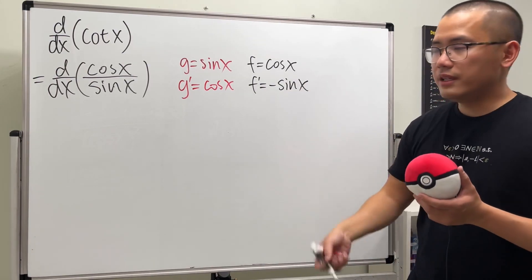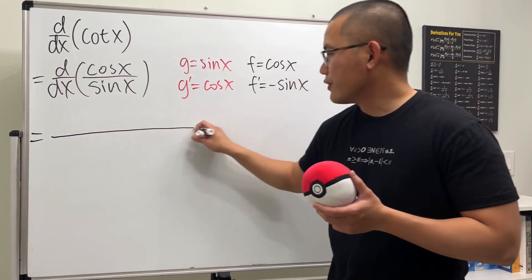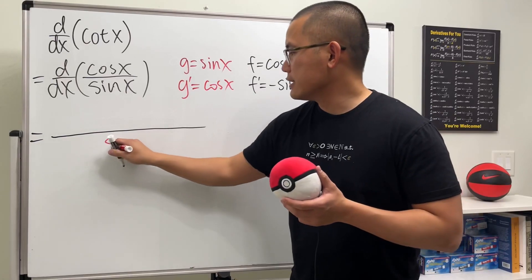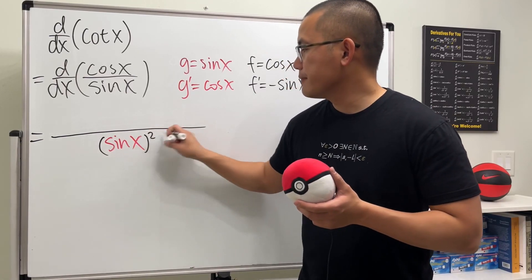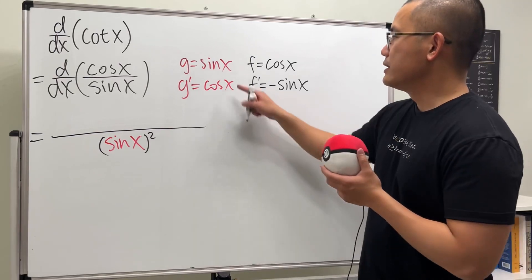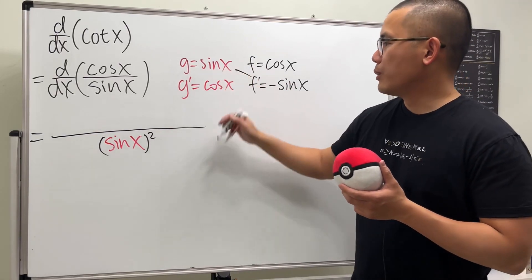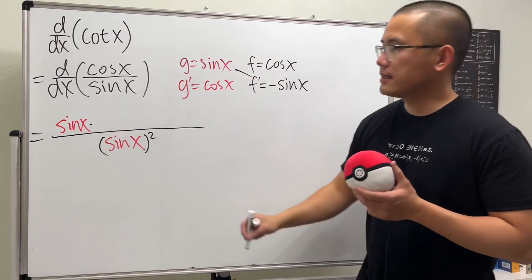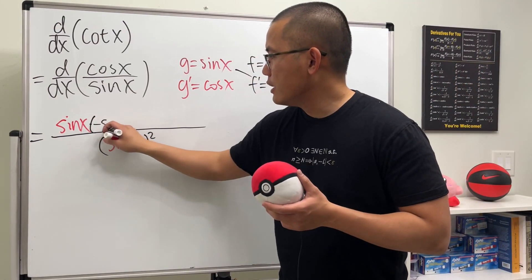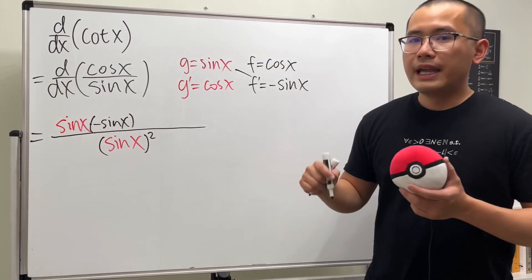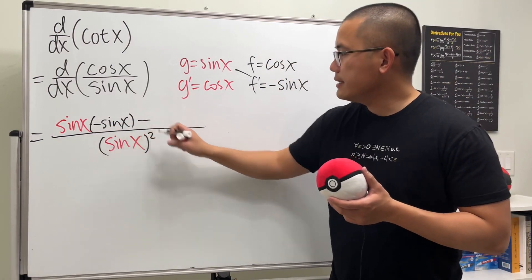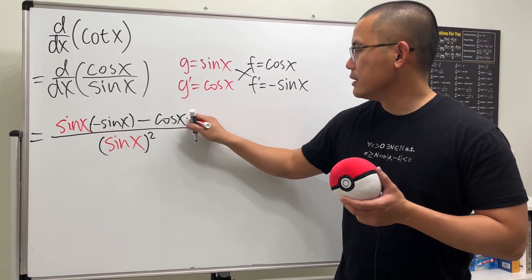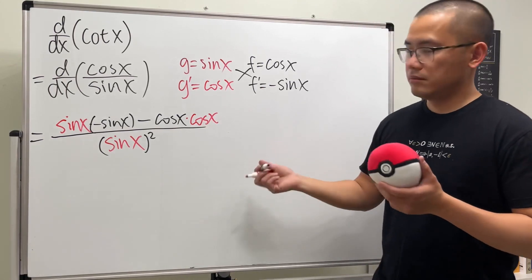And now we have the ingredients. First, draw the fraction bar, and then we are going to square the bottom — so I will put this down as sine x squared. We see that we do this times that, so I will put down sine x right here and we multiply this by negative sine x — I'll put parentheses just to emphasize that we are multiplying a negative. And then next, we have to minus this times that, so we have cosine x times cosine x.